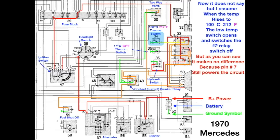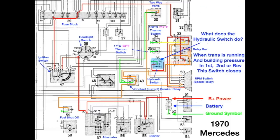It does not say this, but I assume that when the temperature rises to the high temperature, the low temperature switch opens, and switches the number two relay switch off. But, as you can see, it makes no difference, because pin number seven is still powered in the circuit.